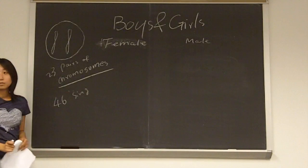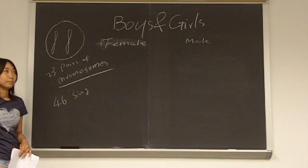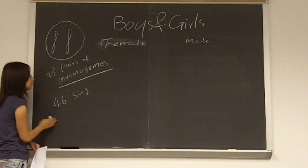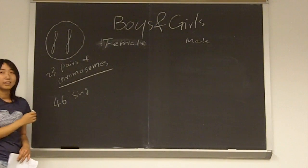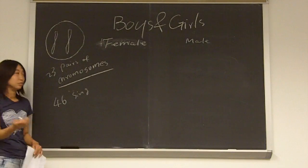For all people, we have almost the same 22 pairs of chromosomes. And the only difference between men and women is on the 23rd.